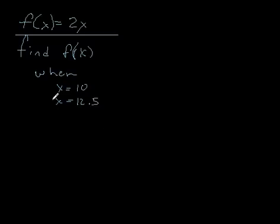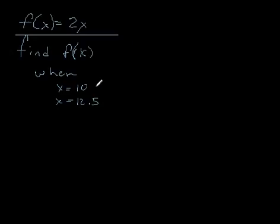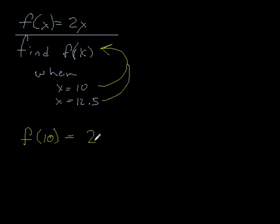So what you're going to do with both of these values of x, you're going to substitute them and plug them right back in to x. So now you have, for when x equals 10, f(10) equals 2 times 10.